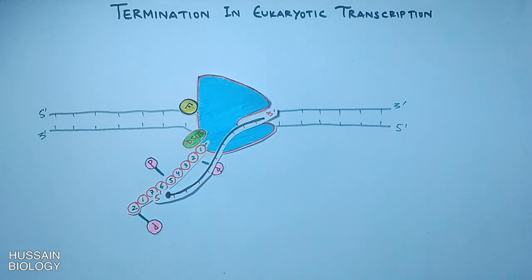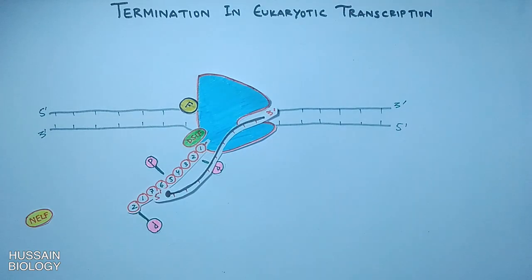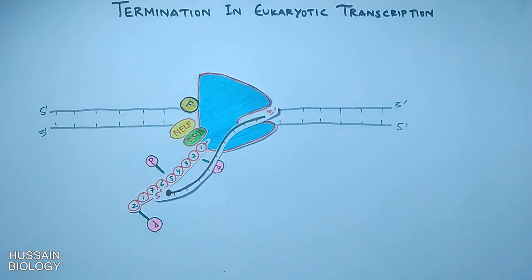So here when kinase is no longer available, the DSIF remains in dephosphorylated state as shown in the diagram. Now to the dephosphorylated DSIF factor, the NELF binds, which is the negative regulator of transcription.